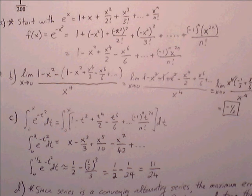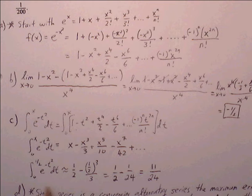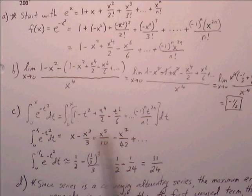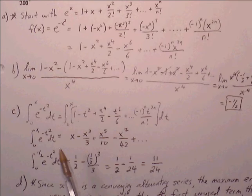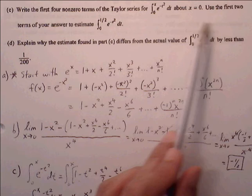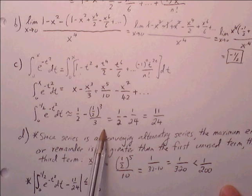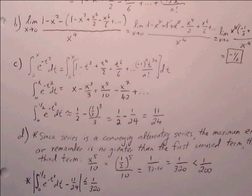Evaluating from 0 to x, all t's become x's. To find the definite integral from 0 to 1 half, we replace all x's with 1 half using the first two terms: 1 half minus (1 half) cubed over 3. Since (1 half) cubed is 1 eighth, and 1 eighth divided by 3 is 1 over 24, the result is 1 half minus 1 over 24, which equals 11 over 24.